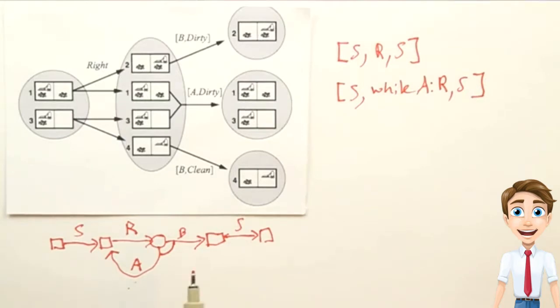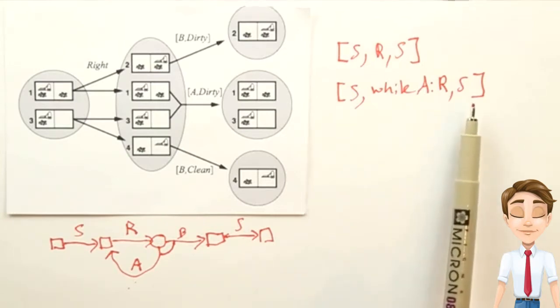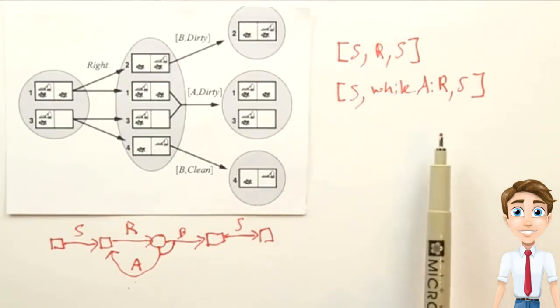Now, what can we say about this plan? Does this plan achieve the goal? Well, what we can say is that if the stochasticity is independent, that is, if sometimes it works and sometimes it doesn't, then with probability one in the limit, this plan will in fact achieve the goal. But we can't state any bounded number of steps under which it's guaranteed to achieve the goal. We can only say it's guaranteed at infinity.